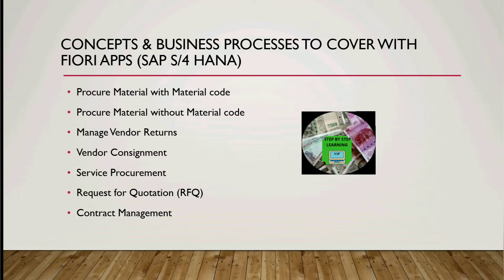The first process is procure material with a material code — that is, procurement of material with a material code — and procurement of material without a material code. We will also cover manage vendor returns, vendor consignment, service procurement, request for quotations, and contract management.